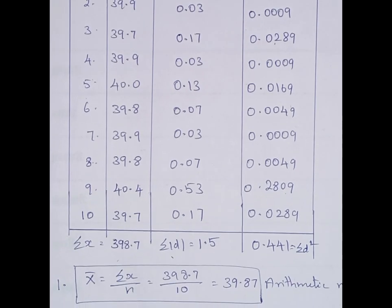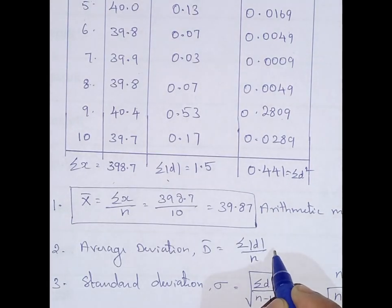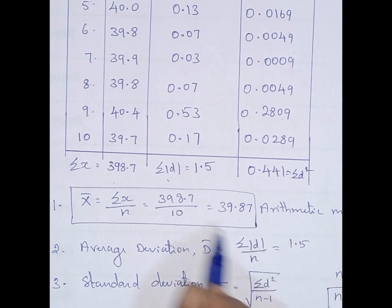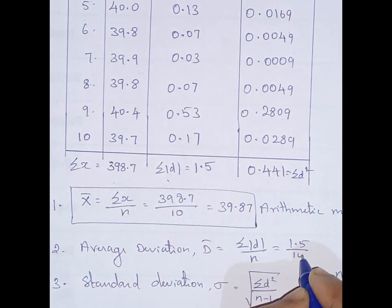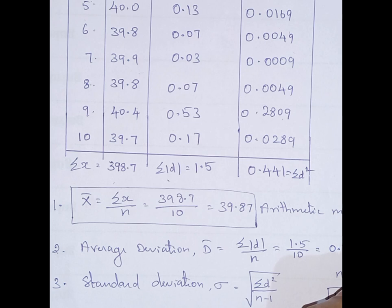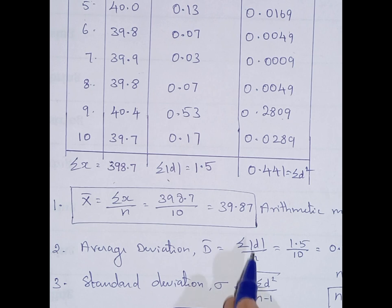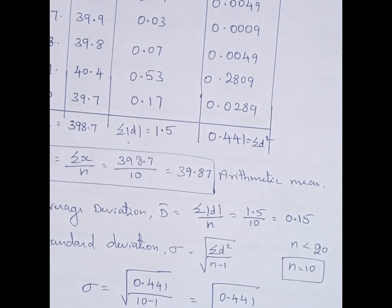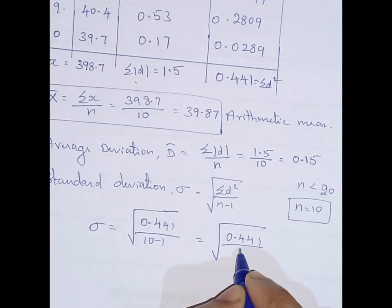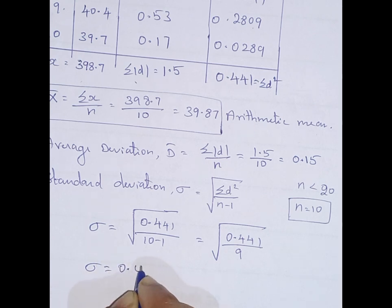Now, average deviation is summation of modulus of D divided by n, which is 1.5 divided by 10, giving 0.15. For standard deviation, since n is less than 20 (n equals 10), sigma equals the square root of summation of D squared divided by n minus 1 — that is, square root of 0.441 divided by 9 — giving sigma equal to 0.041.